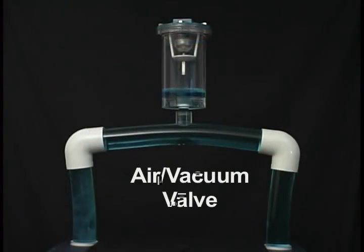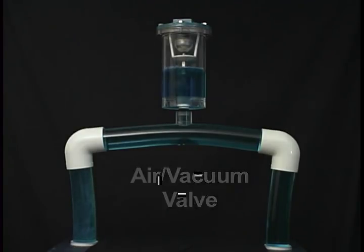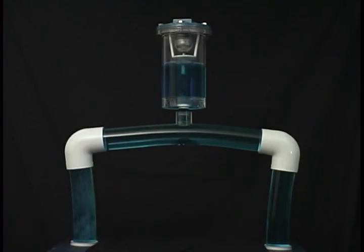We've seen how an air release valve will vent air at system high points, but air release valves will not admit large quantities of air or allow air in for vacuum protection. For that, you need an air vacuum valve like the one shown here. Air vacuum valves, sometimes referred to as large orifice valves, are used to exhaust large quantities of air upon system startup, as well as allowing air to re-enter the line upon system shutdown or system failure.